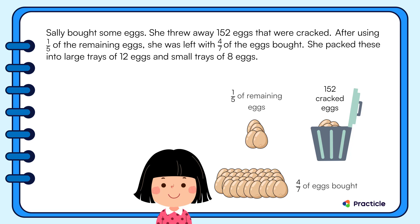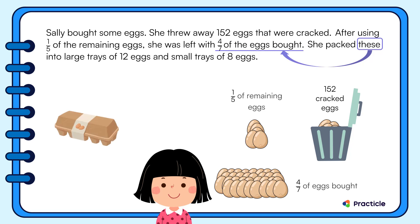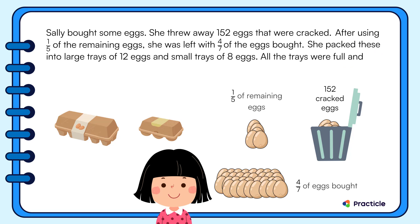Do you know what 'these' refers to? What did Sally pack? 'These' refers to four-sevenths of the eggs she bought. Sally packed four-sevenths of the eggs she bought into large trays of 12 eggs and small trays of 8 eggs. All the trays were full and there was no leftover.